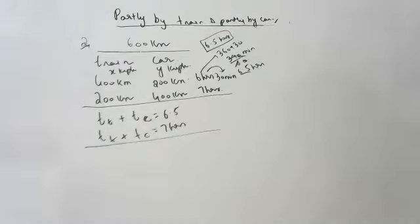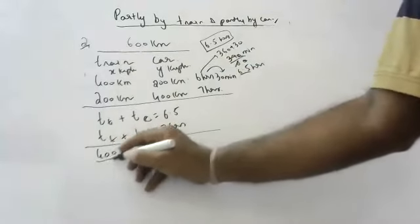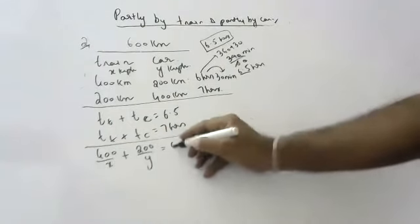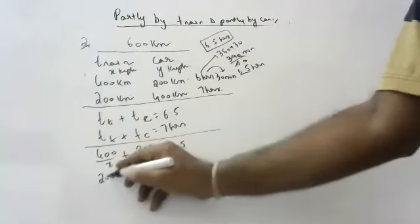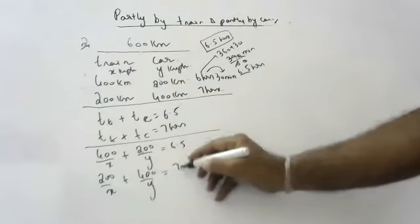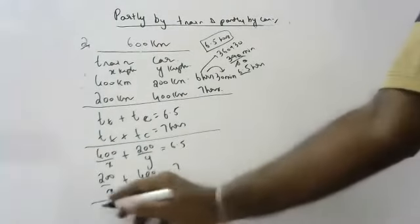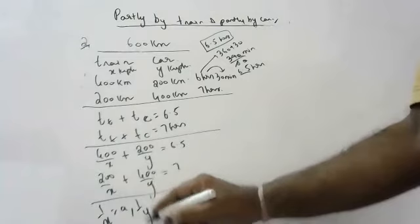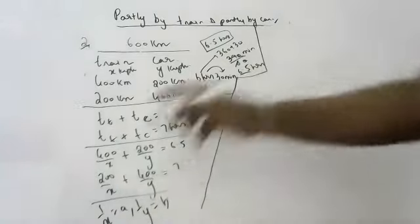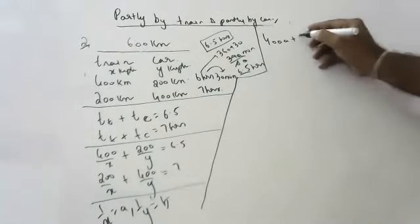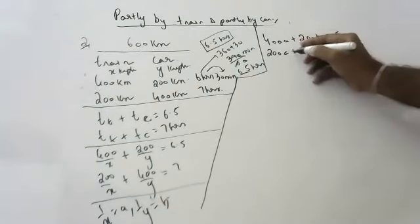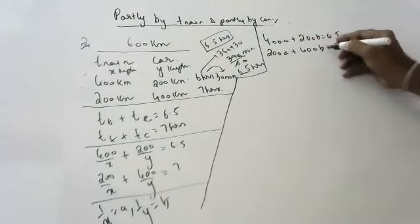Time equals distance divided by speed. First equation: 400/x plus 200/y equals 6.5. Second equation: 200/x plus 400/y equals 7. Taking 1/x as A and 1/y as B: 400A plus 200B equals 6.5, and 200A plus 400B equals 7.